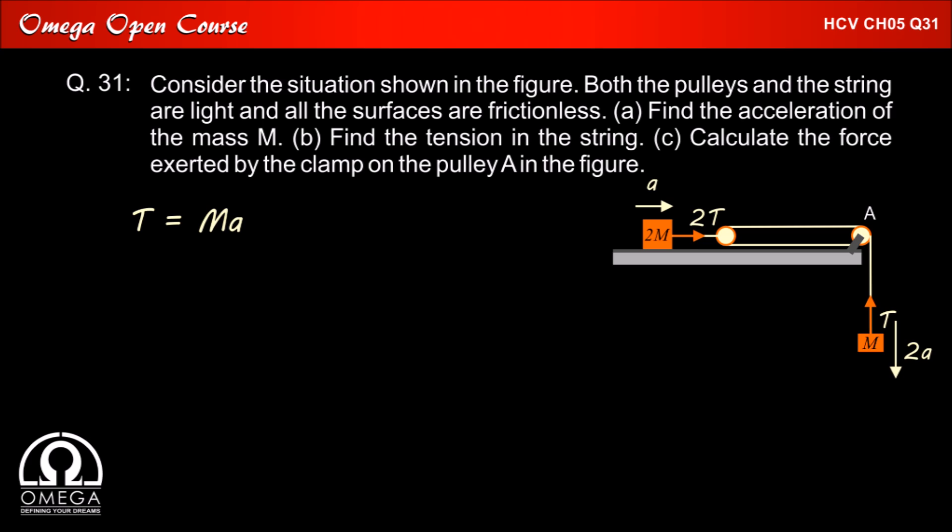From equation 1, we know that T is equal to ma. Putting the value of acceleration, we get tension is equal to mg by 3. This is answer to part b.